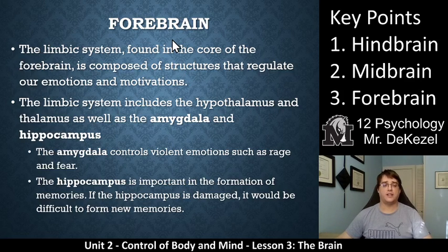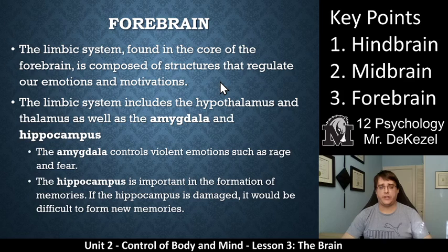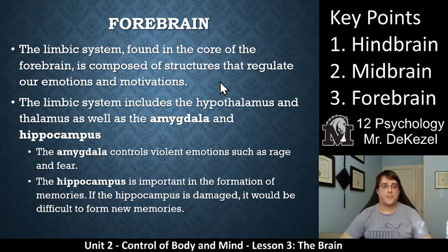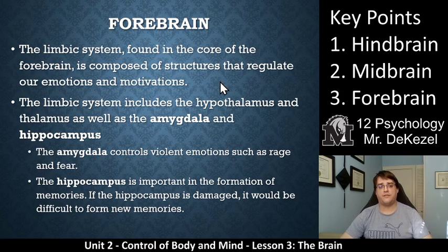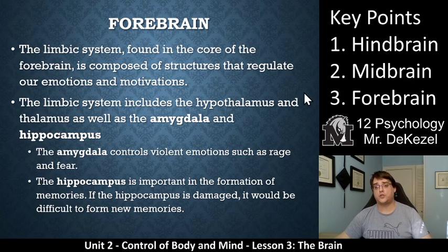Also in the forebrain is the limbic system, located in the core of the forebrain, composed of structures that regulate emotions and motivations. It includes the hypothalamus, the thalamus, the amygdala, and the hippocampus. The amygdala controls violent emotions such as rage and fear. The hippocampus is important in forming memories — if it is damaged, it is difficult to form new memories, making short-term memory more difficult.